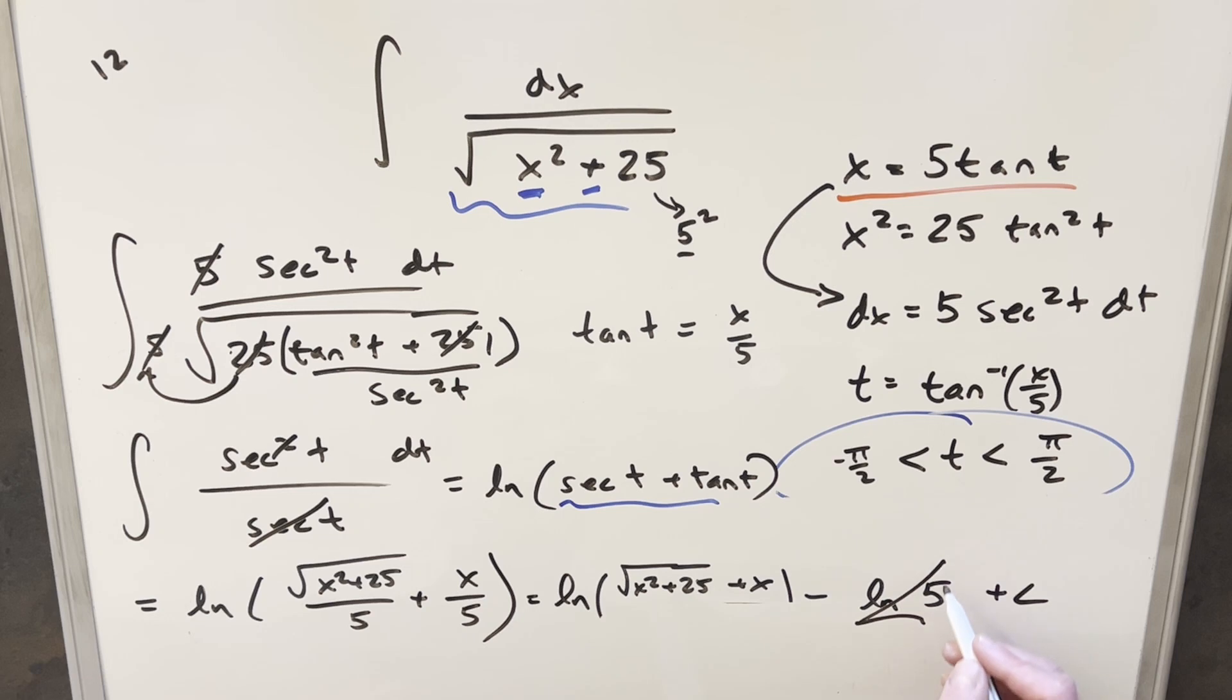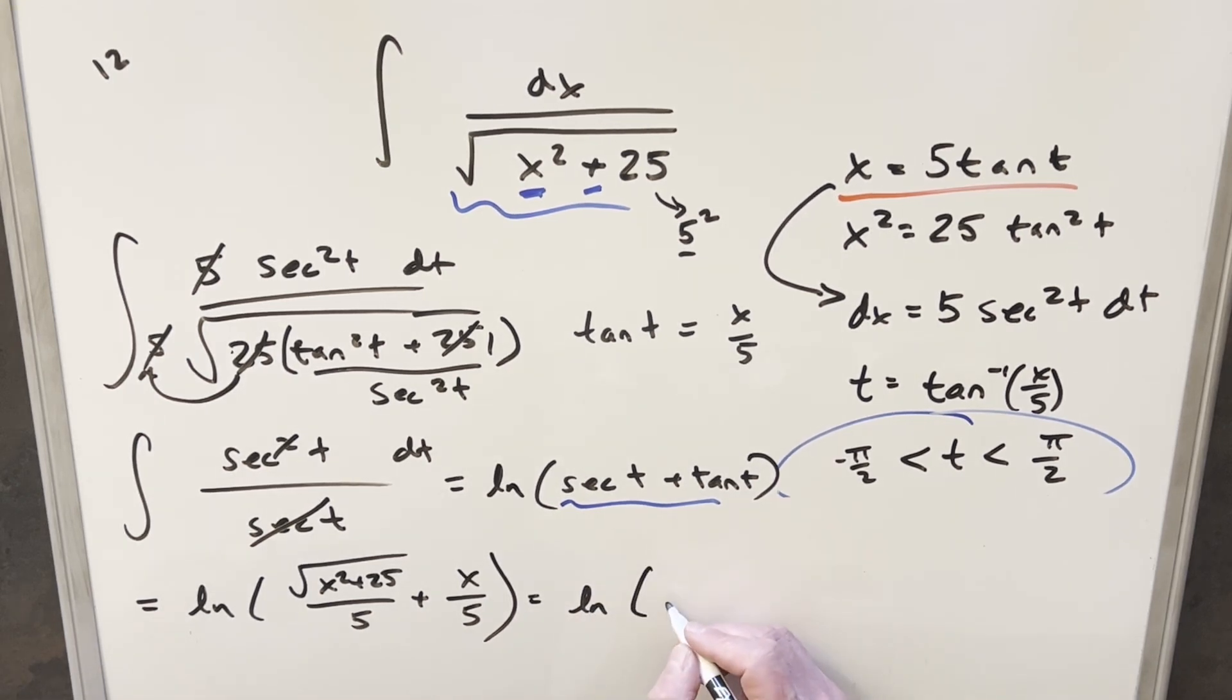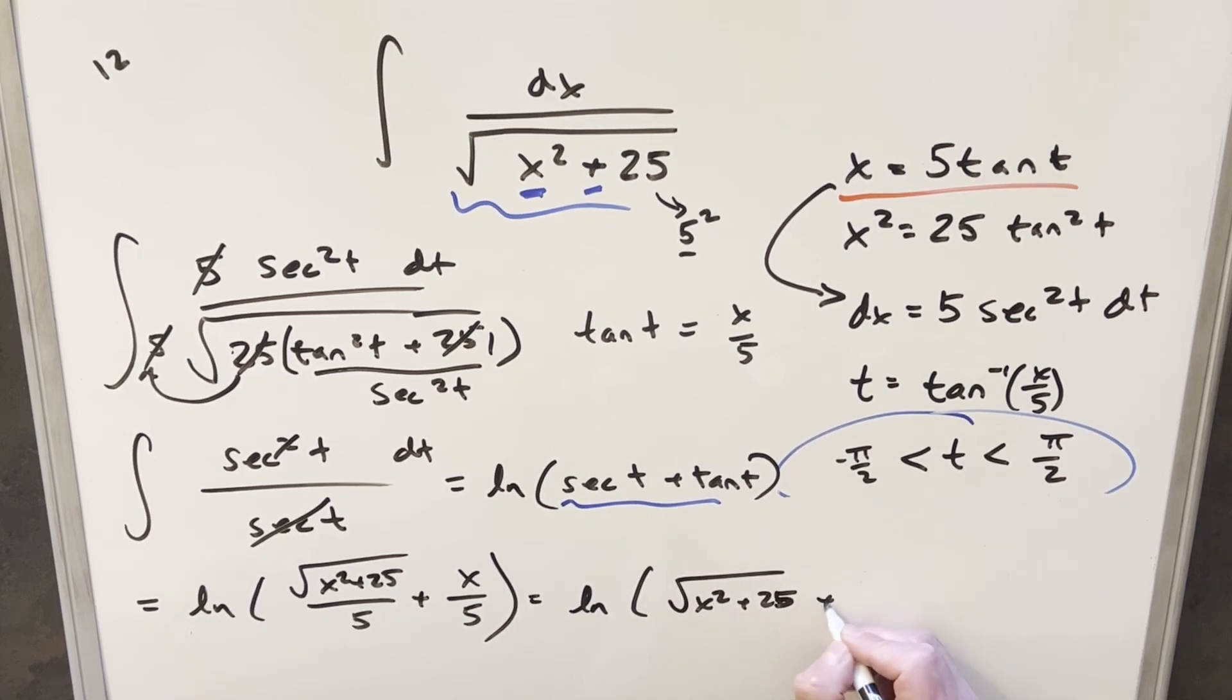But now keep in mind there's a plus c here. This is just a constant value. So this actually goes away because we can just absorb that in our constant. And so for the final solution, we just get natural log square root x squared plus 25 plus x plus c. And that's it.